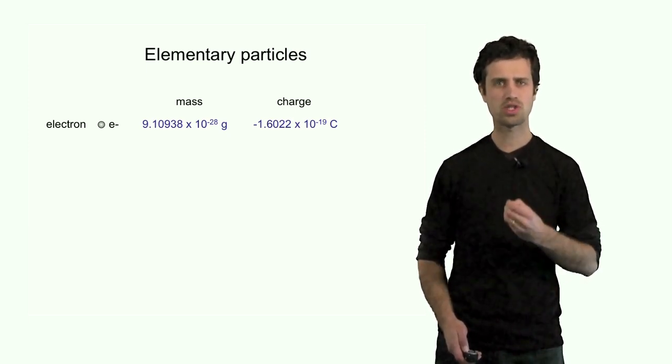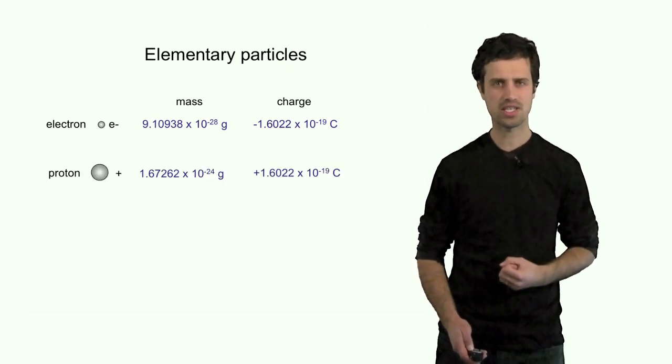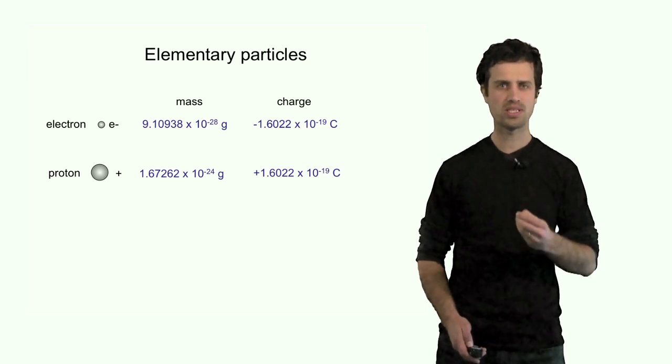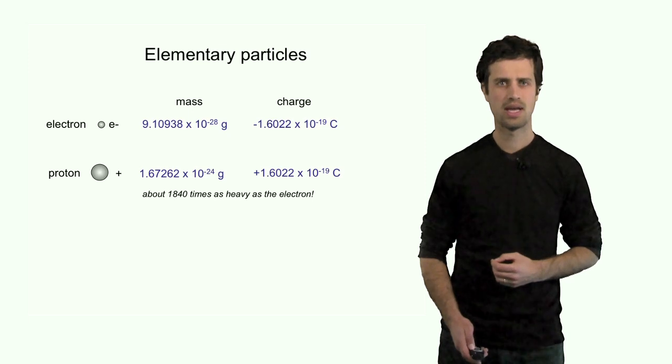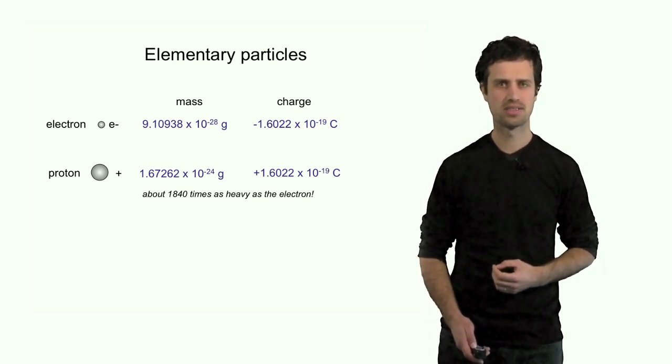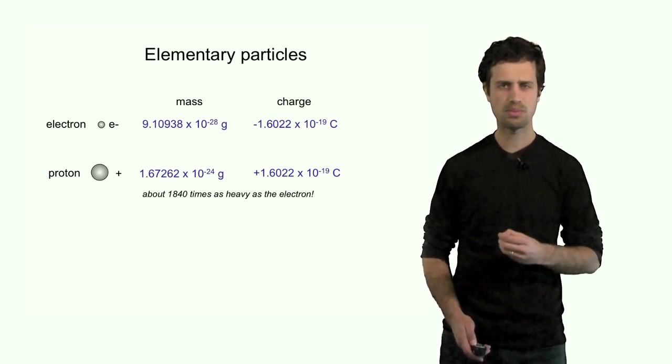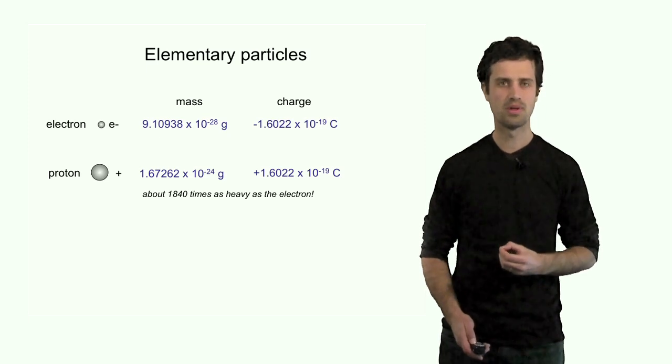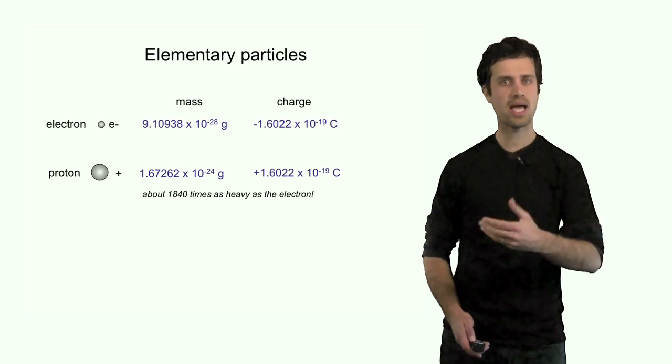Coulomb is the unit of charge indicated by capital C. The proton is larger than the electron. Its mass is 1.67 × 10⁻²⁴ grams, and that's about 1800 times heavier than the electron. It also has a charge. Its charge is plus 1.6 × 10⁻¹⁹ Coulomb. That's the same magnitude as the charge of an electron, yet its sign is different.